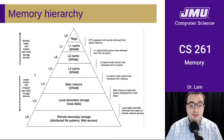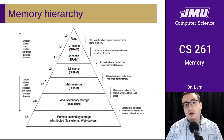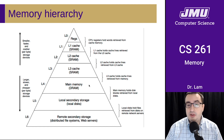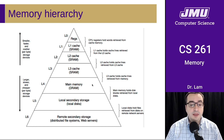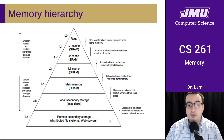As we get further from the CPU, we have memory types that are cheaper so that we can build more of them, but they are slower. We have main memory, which is something called DRAM, which we'll talk about in a minute. And then of course we have secondary storage like hard drives and remote secondary storage like web servers or distributed file systems.